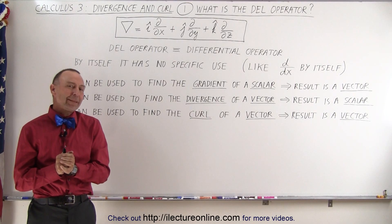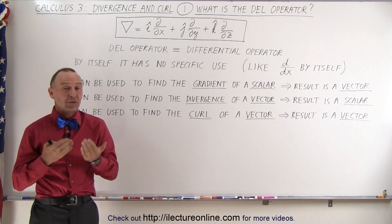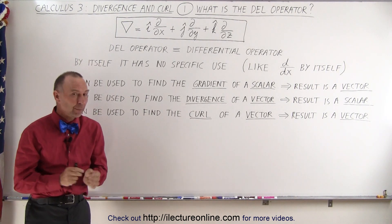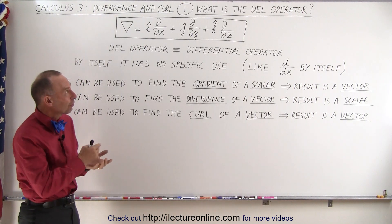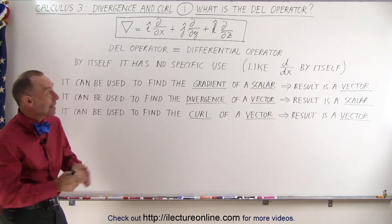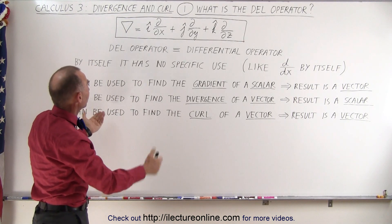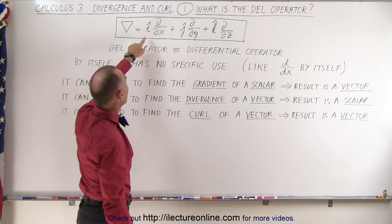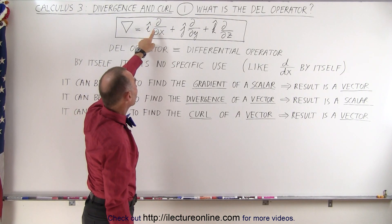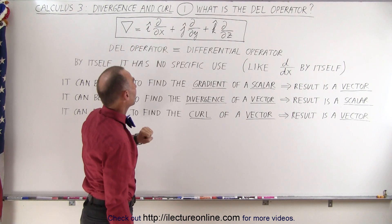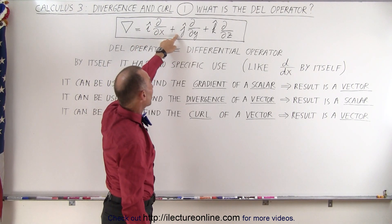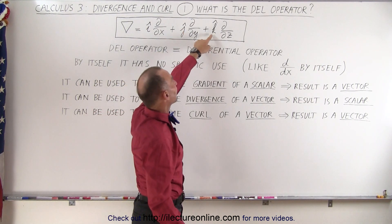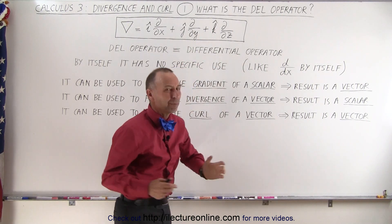Welcome to my lecture online. Here we're beginning a new playlist about the divergence and the curl. But before we go there, we need to understand the concept of the del operator. Here in the box we have the mathematical definition of the del operator. It's an upside down triangle and it's equal to the unit vector in the i-direction times the partial derivative with respect to x, plus the unit vector in the j-direction times the partial derivative with respect to y, plus the unit vector in the k-direction times the partial derivative with respect to z.